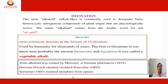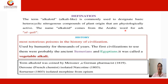Definition of alkaloid: The term alkaloid, meaning alkali-like, is commonly used for the decisively basic heterocyclic natural compounds of plant origin that are physiologically active. The name alkaloid comes from the Arabic word for ash, alkali.